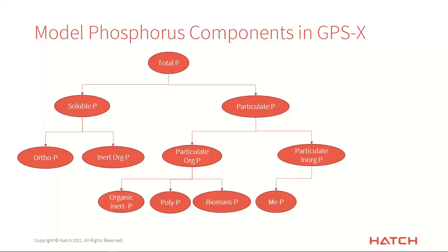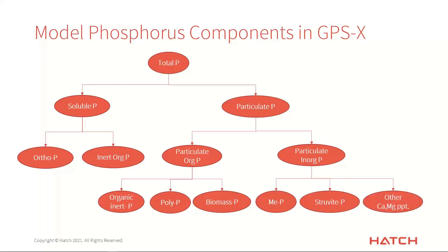On the inorganic side, we have various metal phosphates that are potentially generated if you're doing chemical phosphorus removal. Some precipitation actually happens even in the biological reactors. Additionally, types of precipitation involving inorganic components like calcium, magnesium, and potassium combine with phosphorus and precipitate it — such as struvite, which is the most common one. In our model, as I'll show in a few moments, there are actually quite a few precipitates that will remove phosphorus from the system.